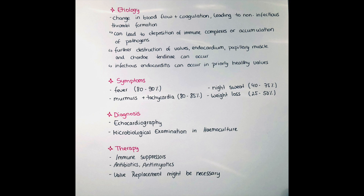Further destruction of the valves, the endocardium itself, the papillary muscle, and the chordae tendineae can occur. The chordae tendineae are small fibers that attach to the valvular cusps. Together with destruction of the papillary muscle and the valves themselves, this can lead to changes in the opening and closing of the valves. It's also important to note that infectious endocarditis can occur in previously healthy valves — there doesn't have to be an underlying heart disease.